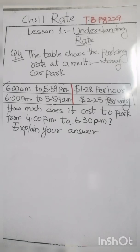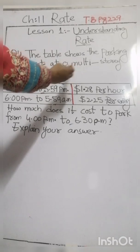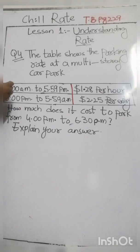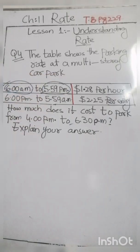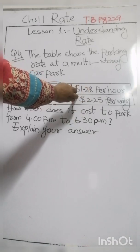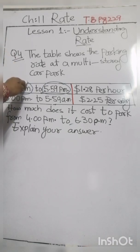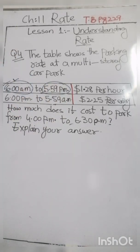Now we have question number four. The table shows the car parking rate at a multi-story car park. Two rates are given. One rate is from morning 6 a.m. to evening 5:59 p.m., and the rate is $1.28 per hour. It means if we stay from 6 a.m. to 7 a.m. we must pay $1.28.